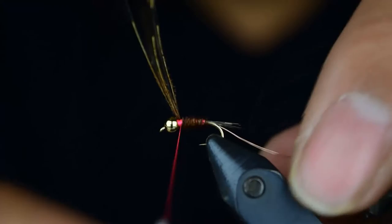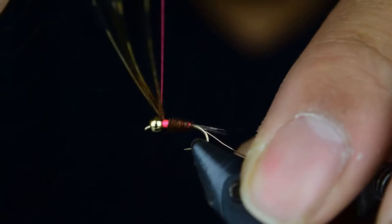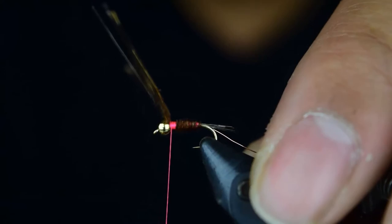So you want to go up to about right there, about a bead's length from the bead, and you're going to go ahead and lash these down and get them underneath that bead. They'll flare out when they get underneath the bead like so.